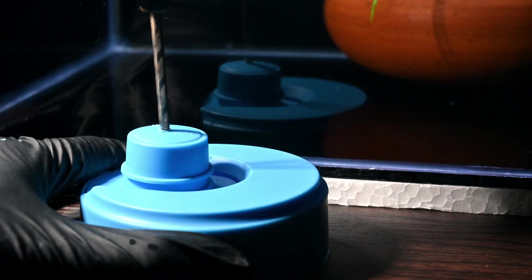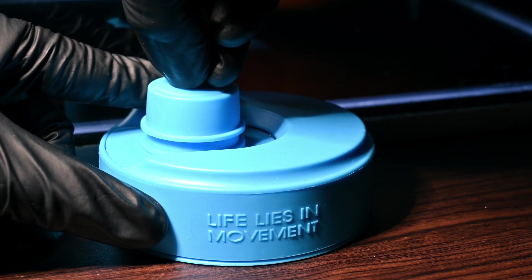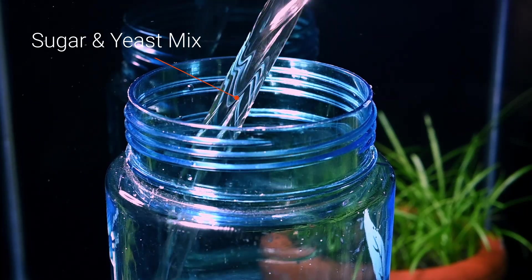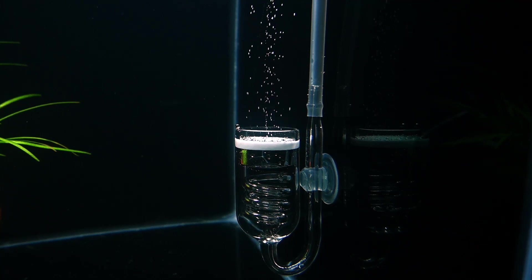If you're trying to use DIY CO2 with a sugar and yeast mix, things get tricky. The pressure created by that homemade setup just isn't strong enough to push CO2 through the diffuser membrane, which means you'll likely struggle to get any real results.